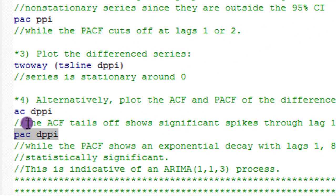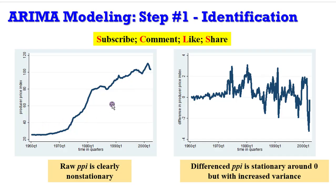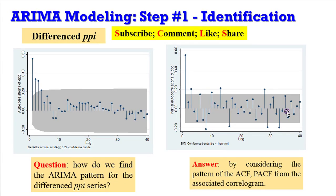We then plot the PACF of the differenced series. Recall the raw PPI was trending upward — clearly non-stationary — while the differenced PPI is stationary around zero, even though variance increases over time. The ACF of the raw PPI declined very slowly up to 15 lags, indicating non-stationarity, with the first 15 lags outside the 95% confidence interval, while the PACF cuts off at lag one or lag two.